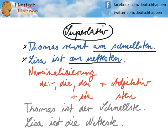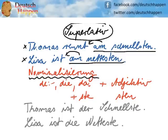Lisa ist am nettesten. There is, however, one thing we can do in German and we call it Nominalisierung. You basically make the adjective — or here the superlative — a noun to describe your subject more. Whereas in our first two sentences, the superlative always describes your verb more closely.